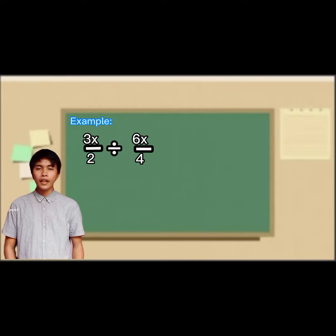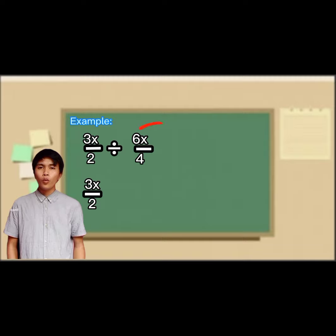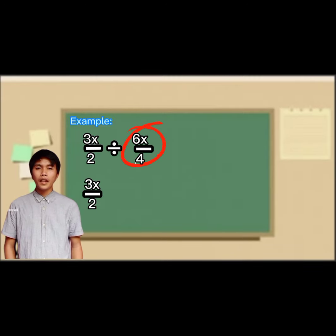Our second fraction is 6x over 4. Then we will invert it to become 4 over 6x.